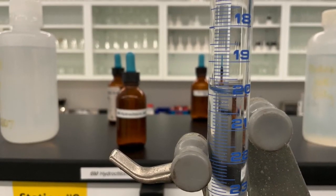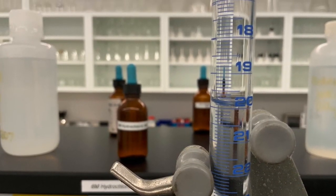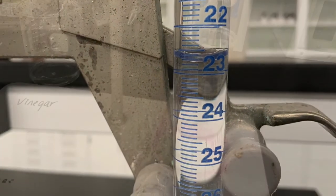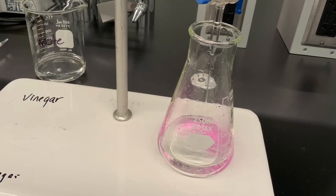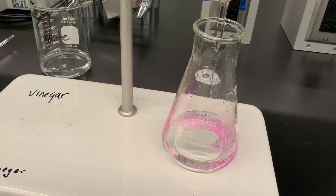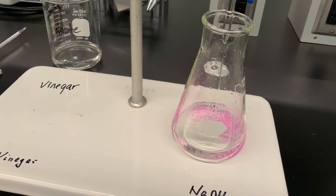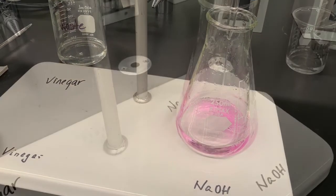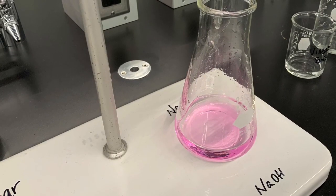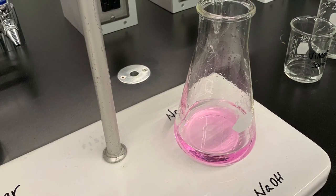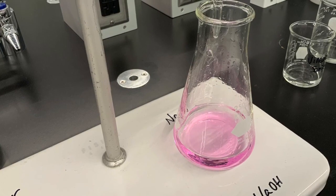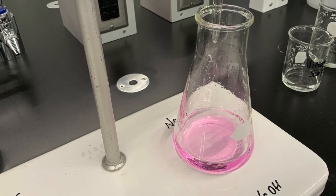As you add more and more sodium hydroxide solution, it will take longer and longer for the pink color to disappear when you swirl. And ultimately it's just one drop that makes the difference and the pink coloration does not disappear anymore. This is when you have equivalent amounts of acid and base in your Erlenmeyer flask.